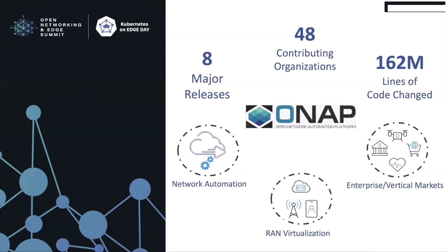Real-time, policy-driven orchestration and automation of physical, virtual, and containerized network functions — ONAP enables rapid automation of new services and complete lifecycle management critical for 5G and next-generation networks. Today, ONAP is successfully established as a de facto industry standard for NFV and SDN automation, a key stakeholder to accelerate 5G deployment and enterprise vertical market virtualization. ONAP is now on the right path for its cloud-native journey.